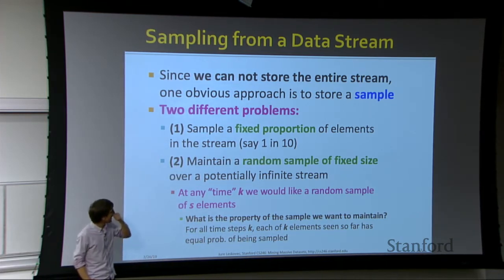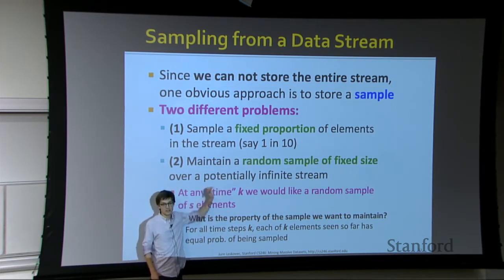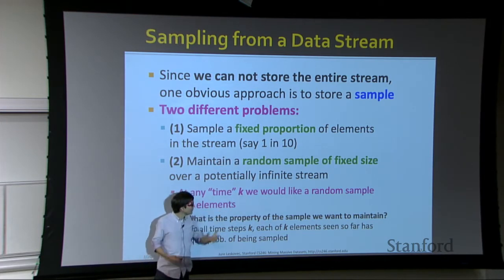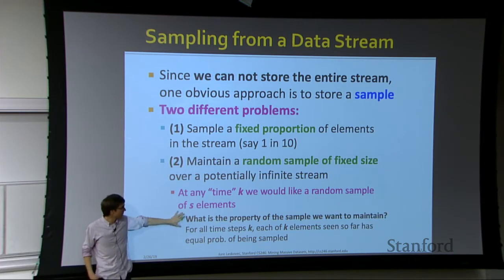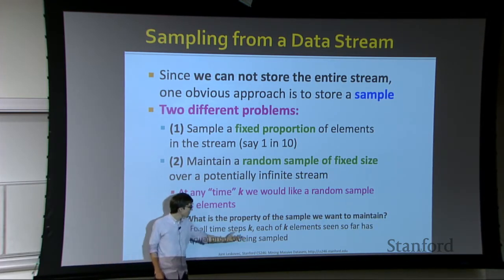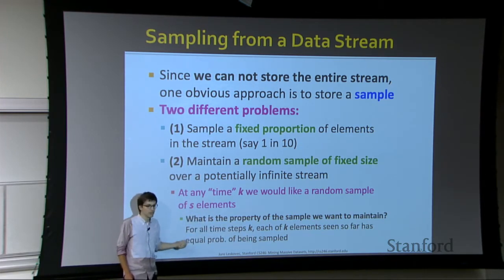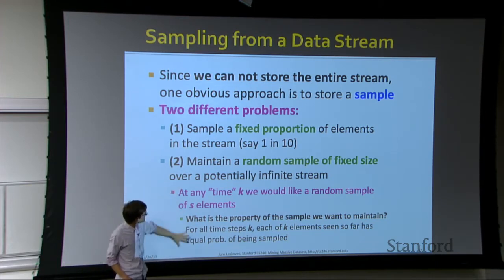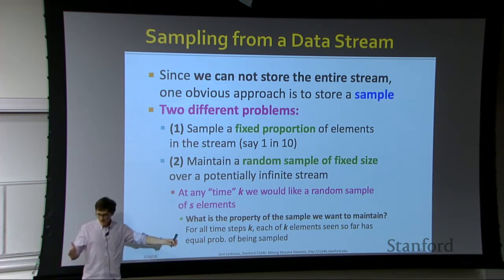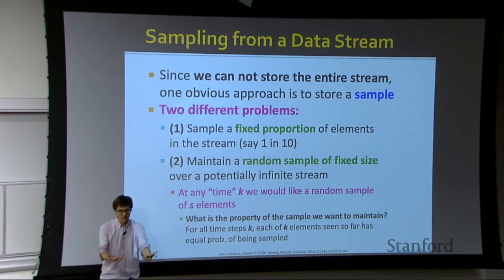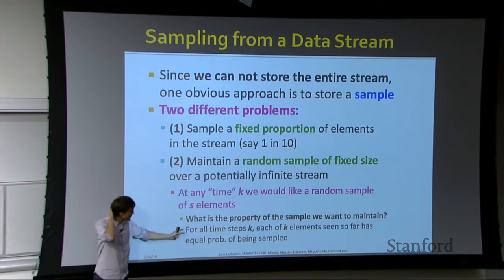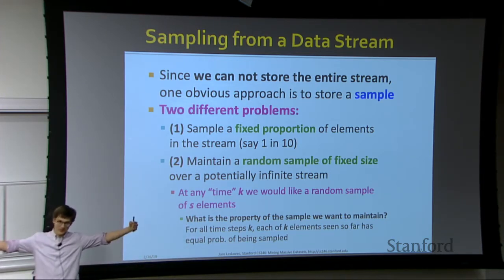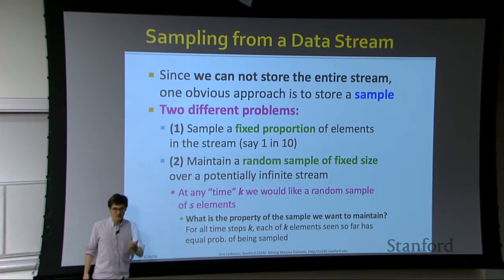A more interesting case: maintain a random sample of fixed size over a potentially infinite stream. At any time k, you want a random sample of s elements over whatever stream you've seen so far. The property to maintain: for any time step k, each of the k elements seen is selected in the sample with equal probability. I have seen k elements, I want to sample s of them; now I've seen k+1, I want a random sample of s from k+1; and so on.